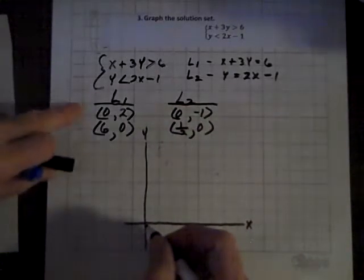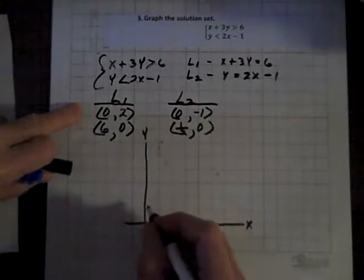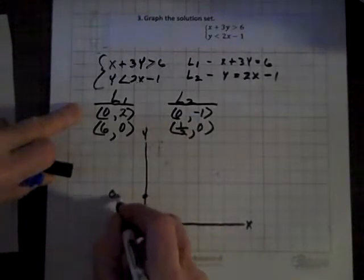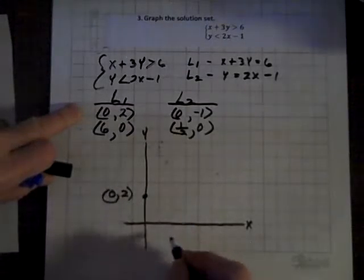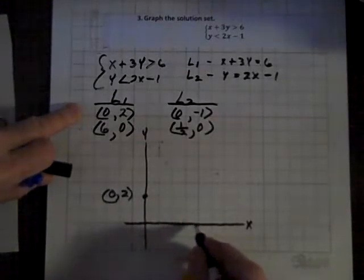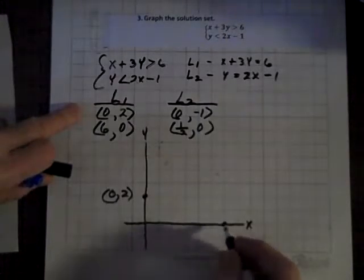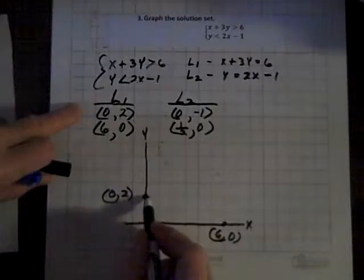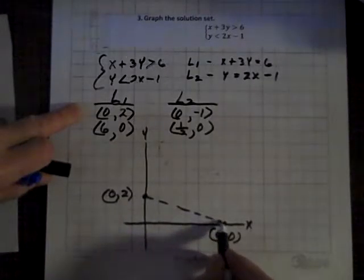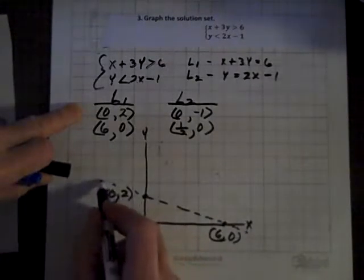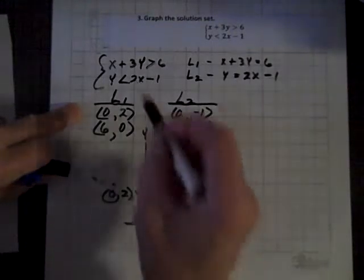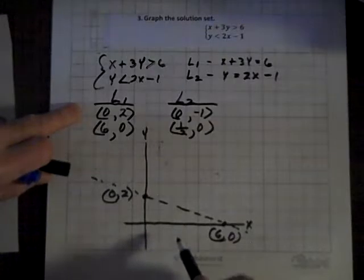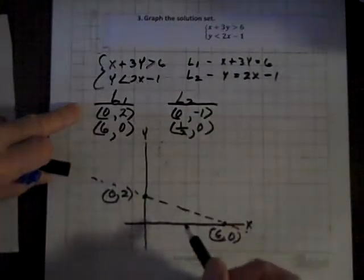And for line 1, we've got a Y intercept at 0, 2, and an X intercept at 6, 0. And we're going to graph this line as a broken line. And the reason is because there is no equal sign associated with the inequality. If there was, we would graph with a solid line.